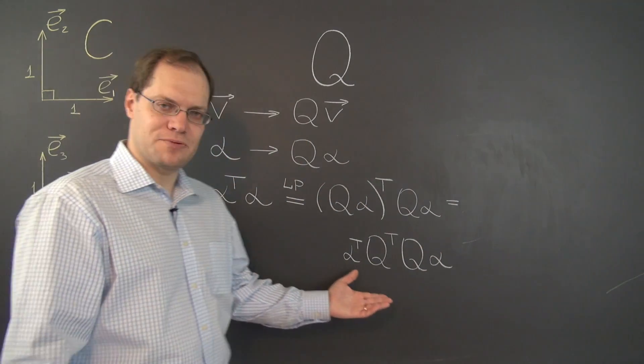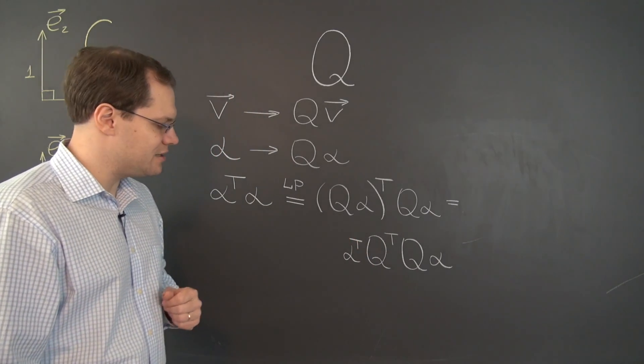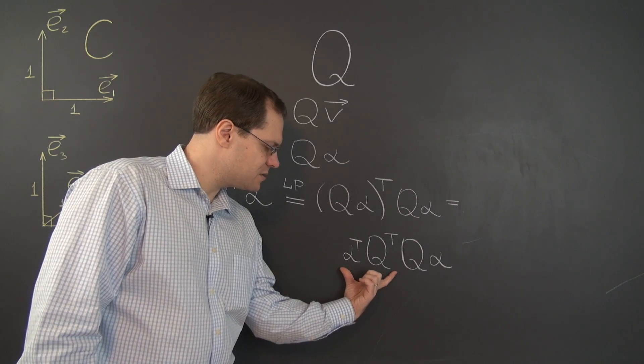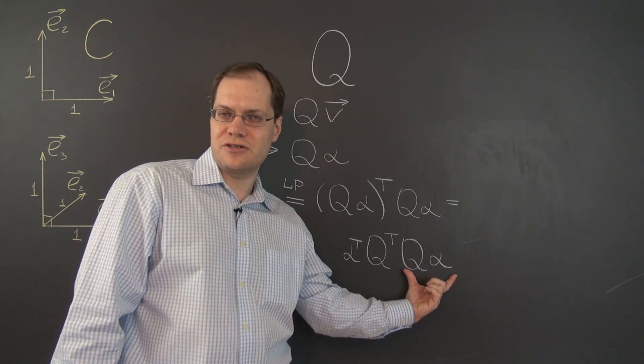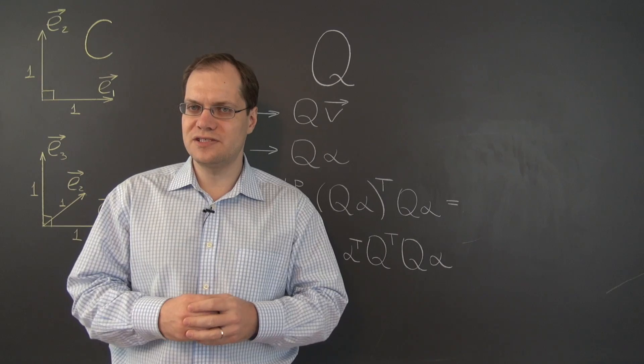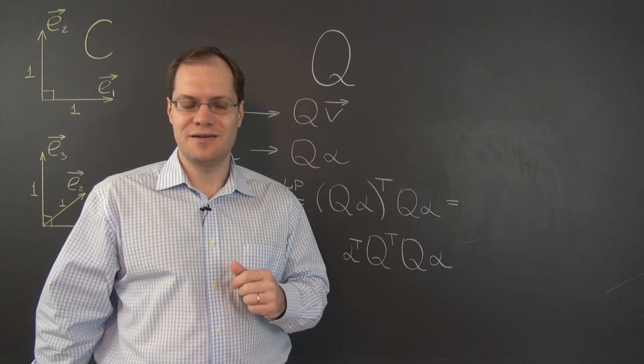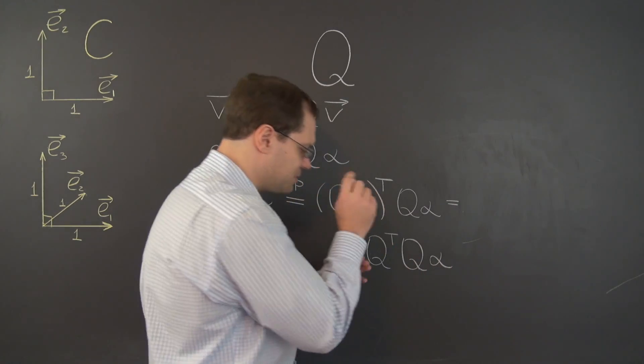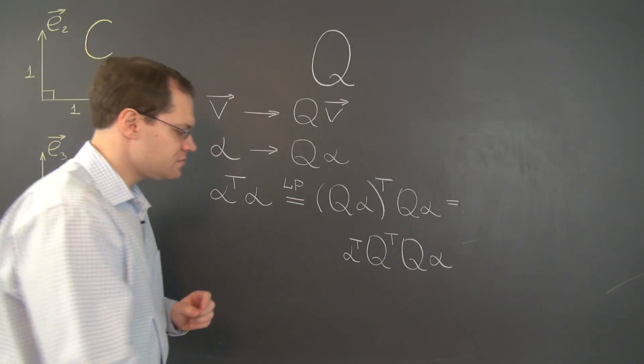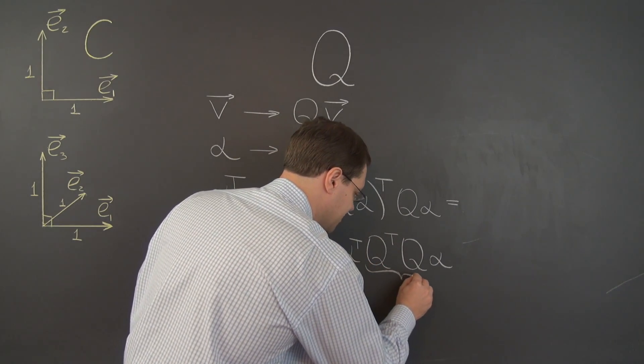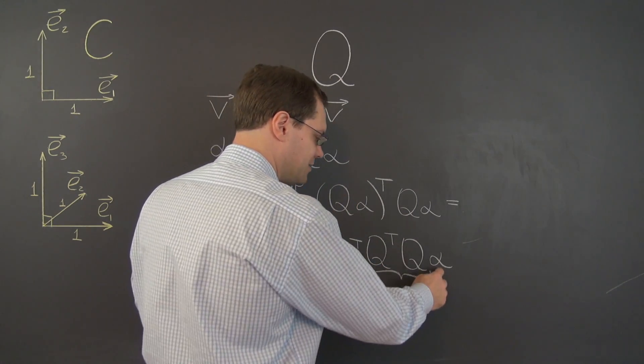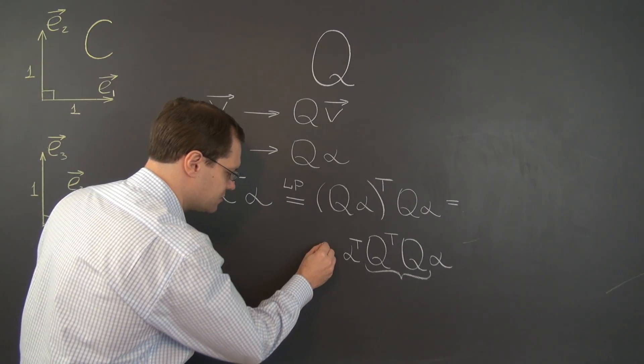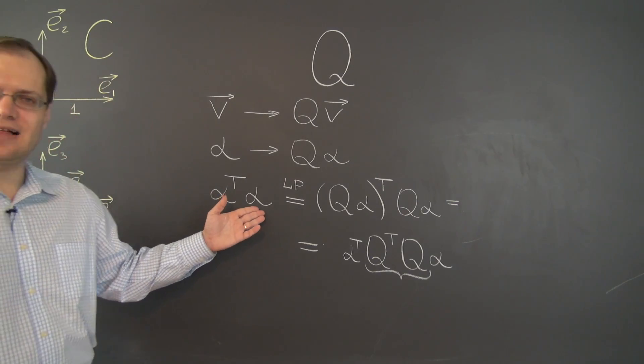So the whole thing will be rewritten as alpha transpose Q transpose Q alpha. The matrix product is associative, so we're not writing any parentheses, they're unnecessary. Your eye might still be thinking that we're multiplying this matrix by this matrix. But now I want you to see differently. I want you to mentally group these two matrices together so this multiplication happens first. So we have alpha transpose times this matrix times alpha.